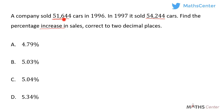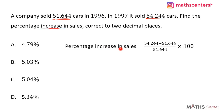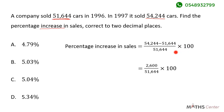The original value is the number of cars sold in 1996, which is 51,644, and the change will be the difference in the number of cars sold between the two years. So the percentage increase equals 54,244 minus 51,644, divided by the original value 51,644, multiplied by 100. This gives us 2,600 divided by 51,644 times 100, which gives us 5.03 percent.